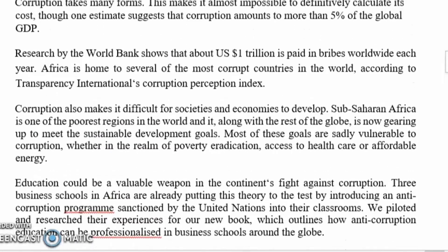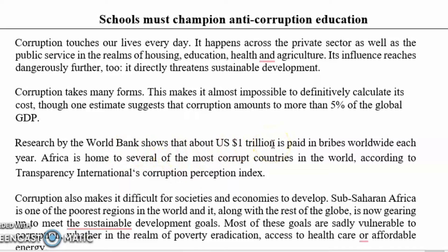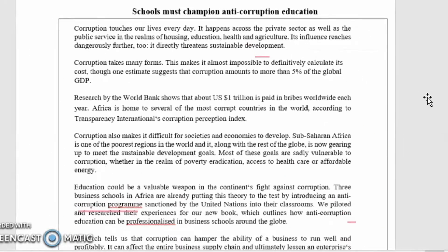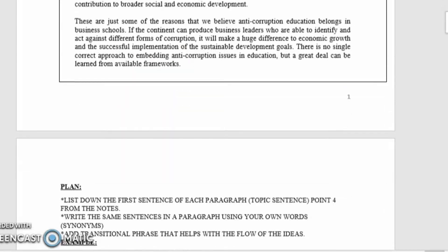The first thing you are going to do is skim. I'm not talking about skim milk — I'm talking about skim as in S-K-I-M. You are going to just lightly go through, not reading deeply, just going through. You might notice: corruption, corruption touches our lives every day, corruption takes many forms, research by the World Bank shows about US $1 trillion is paid in bribes worldwide. That is what you call skimming — just briefly looking at the passage.